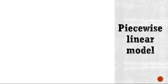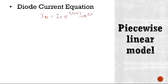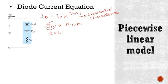Now we will understand the current equation of the diode in the piecewise linear model. We know that the equation of diode current is Id = Is·e^(V/nVt), and this equation represents the exponential characteristic of the diode. Now we will find the diode current equation in the case of the piecewise linear model.